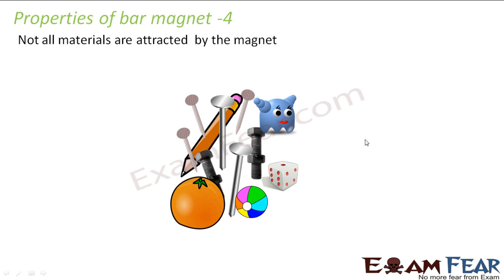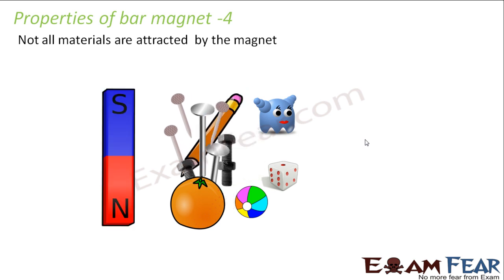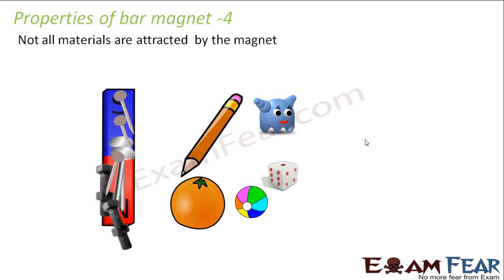To summarize the properties of a magnet: first, a magnet left to itself always aligns in the north-south direction — this is the basis of the magnetic compass used for navigation. Second, we can never isolate a north or south pole; cutting a magnet gives two new magnets. Third, like poles repel and unlike poles attract. Fourth, a magnet attracts only specific magnetic materials, not all objects.